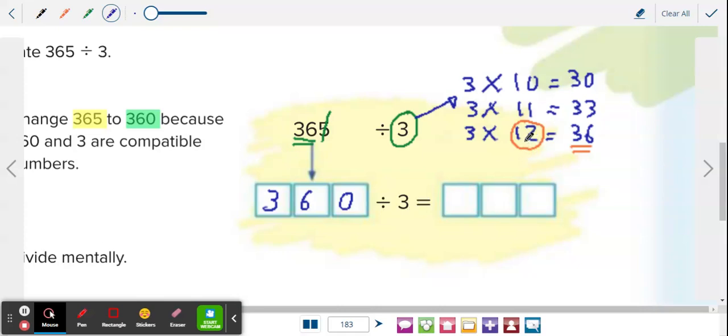You have the answer. The answer is 12. You just copy the number 12 and you add this 0 here. So 360 divided by 3 is 120.